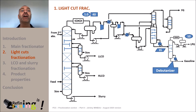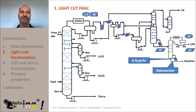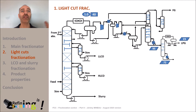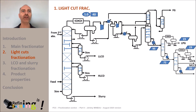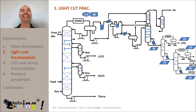We end up with 23 tons per hour of LPG and 72 tons per hour of gasoline. Before concluding on this light cuts fractionation section, it should be noted that gasoline is usually split again into two or three cuts — often three: a light cut called LCCS (light catalytic cracked spirit), a middle cut or MCCS, and a bottoms cut the HCCS. We will see a little bit later the properties and possible destinations of these gasoline cuts.